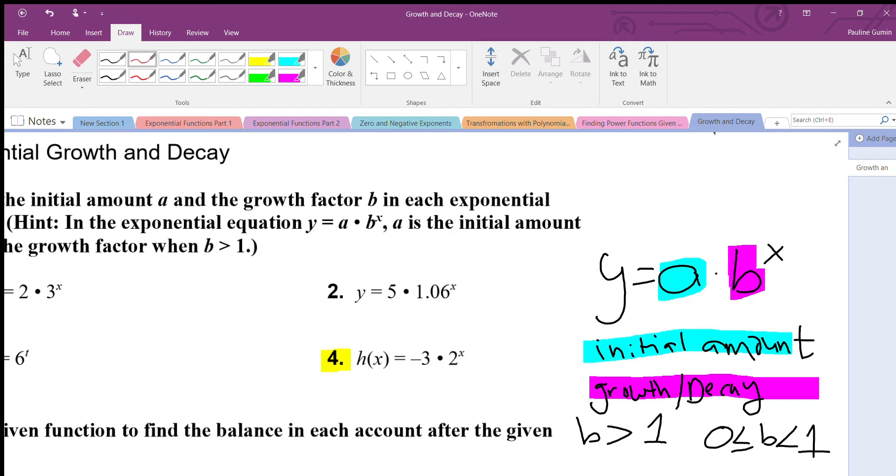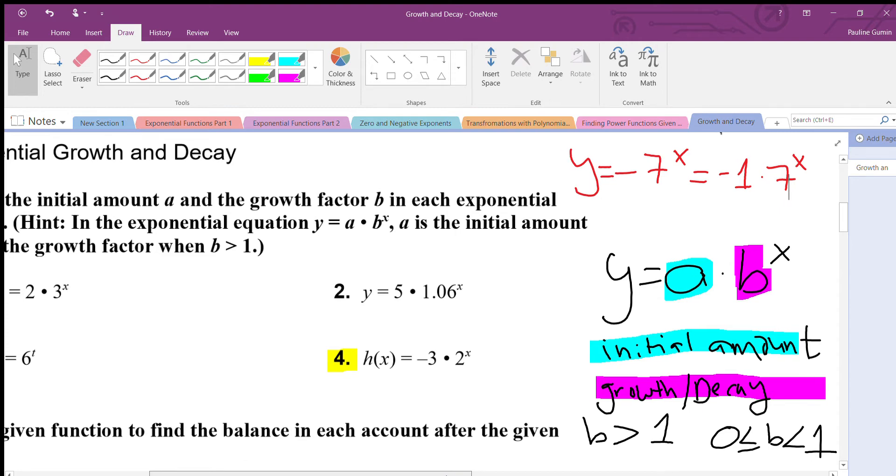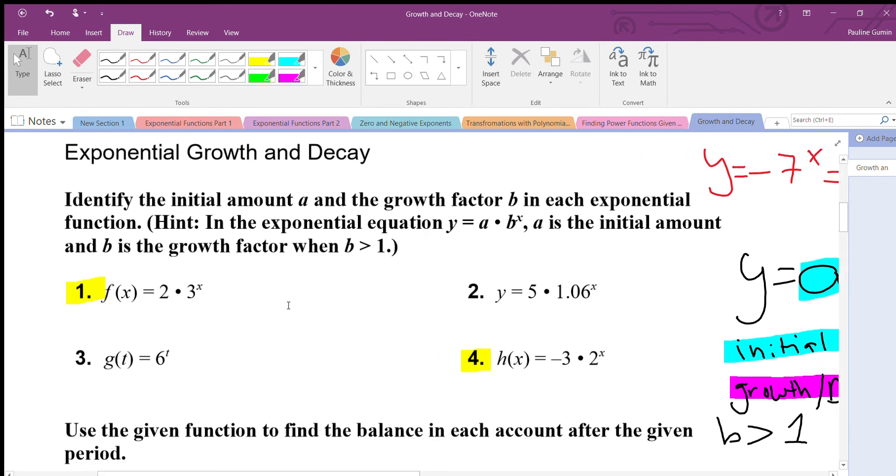Actually this is where I see most mistakes happen. Let me explain that a little further. If we have something like y equals negative seven to the power of x, b is not negative. It's actually an invisible negative one times seven to the x. So if you ever see a negative, it's not the growth or decay factor, it's the initial amount. That's the most common mistake I see.